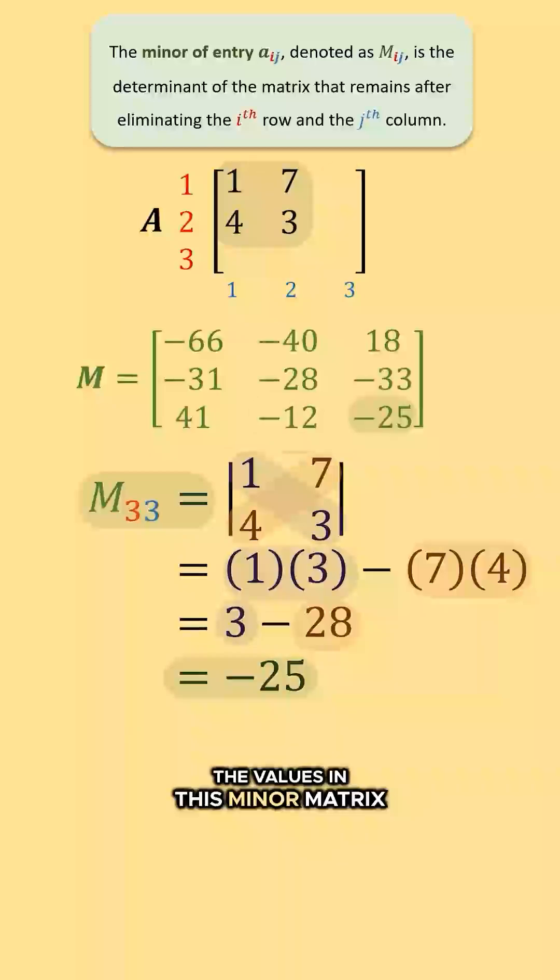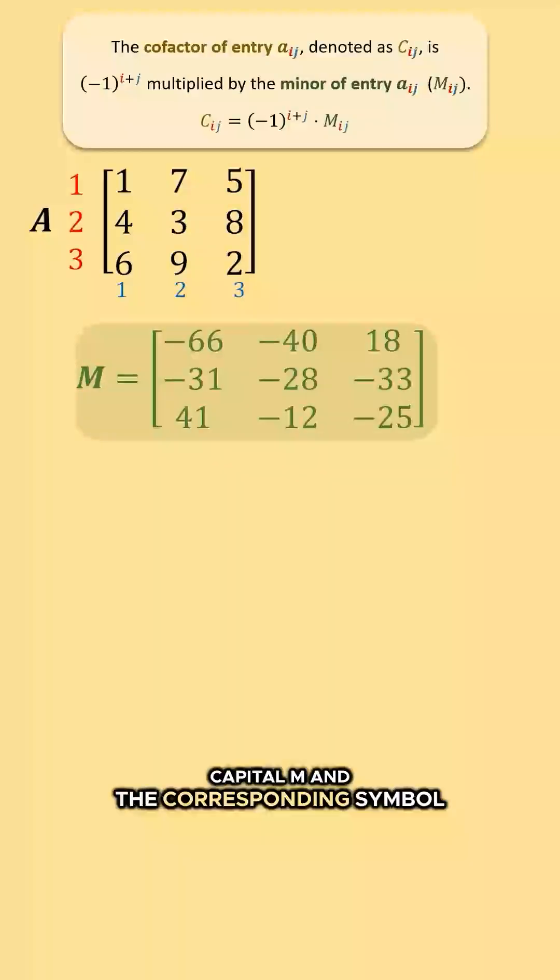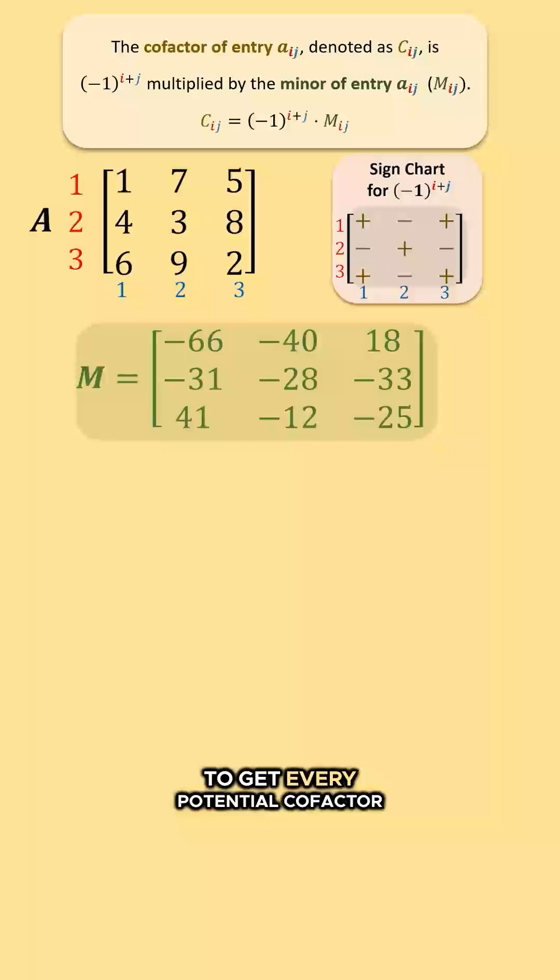Then we can use the values in this minor matrix capital M and the corresponding symbol in this sign matrix to get every potential cofactor of our matrix A.